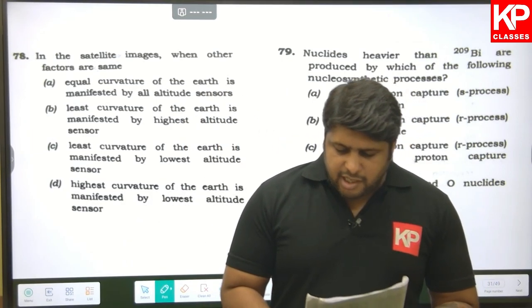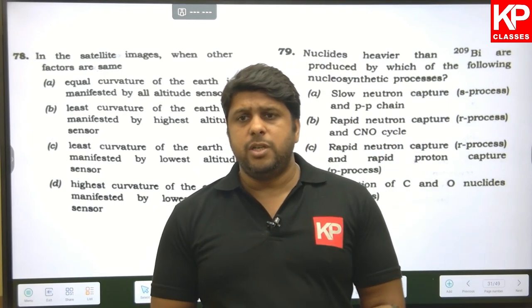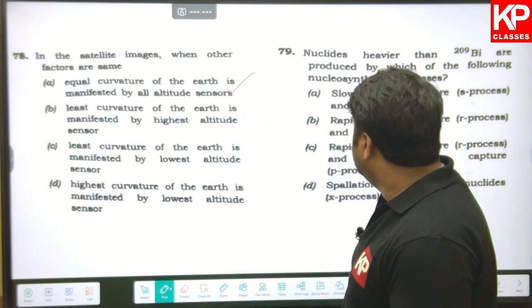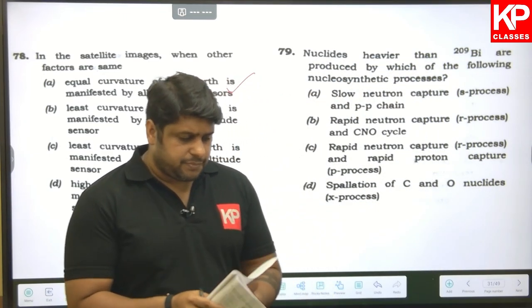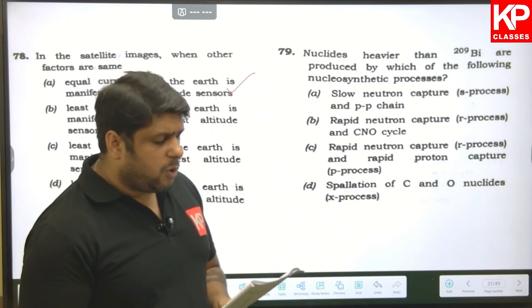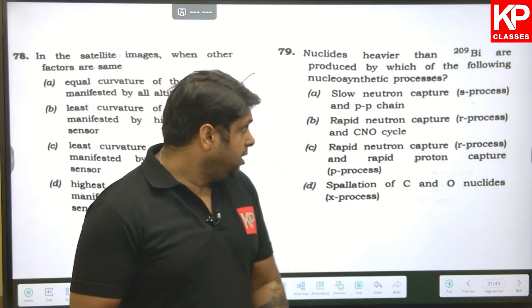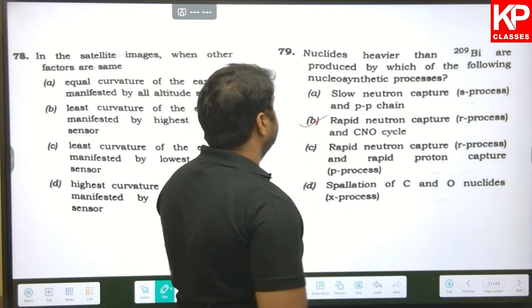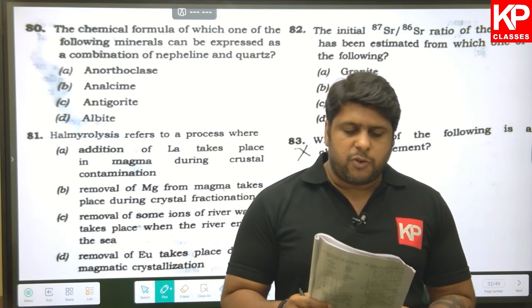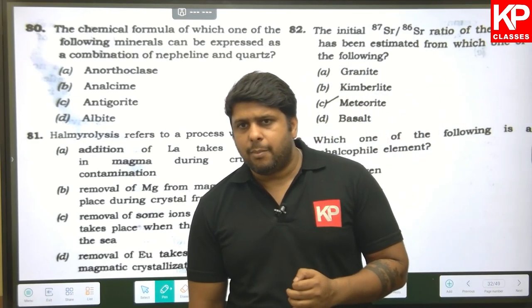Question seventy-eight: in satellite images, when all other factors are kept the same, equal curvature is obtained — A is the right answer. Question seventy-nine: nuclides heavier than ²⁰⁹Bi are produced by which process? The answer is rapid neutron capture (r-process) and CNO cycle, so B is the right answer. Question eighty: the chemical formula of which mineral can be expressed as a combination of nepheline and quartz? That is albite.